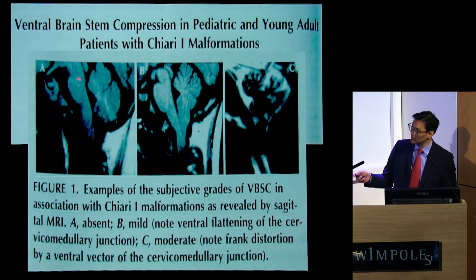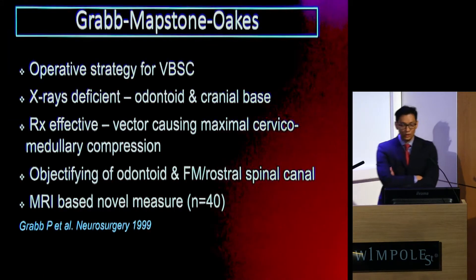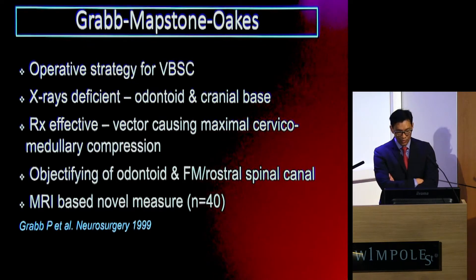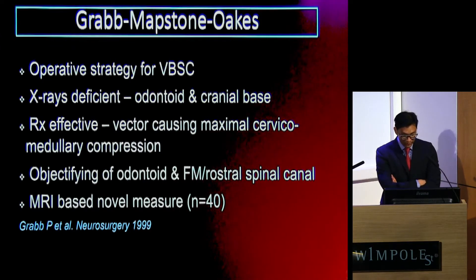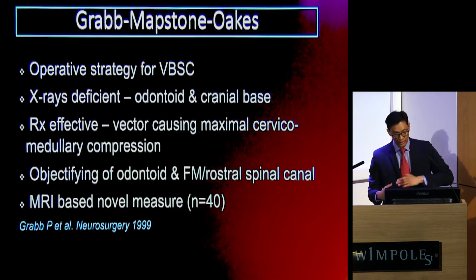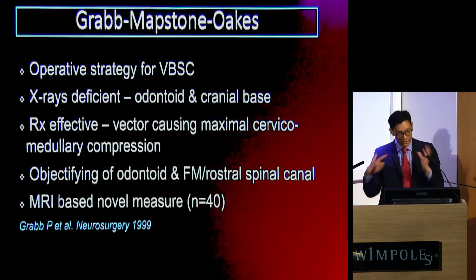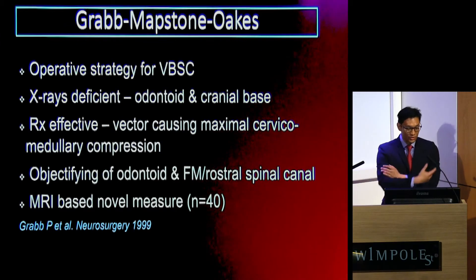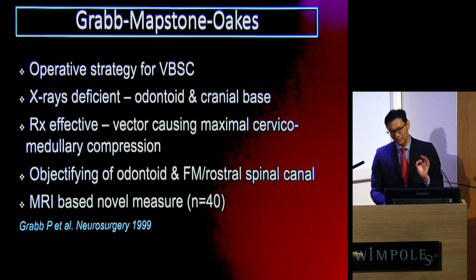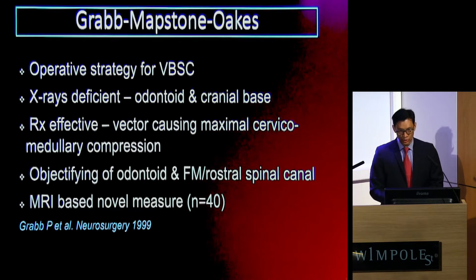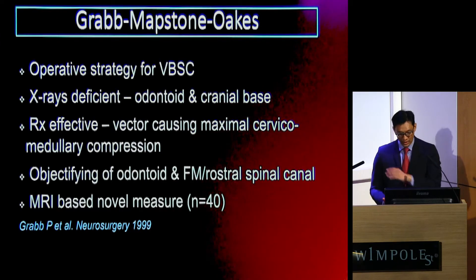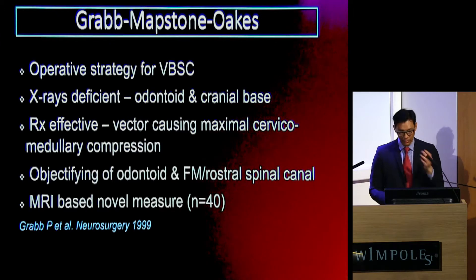What they labelled here is absent, mild, and a more severe compression. What they set out to do was to look at an operative strategy in terms of stratifying risk. They recognised that X-rays were deficient because you were only looking at the odontoid and skull base osseous structures. They also recognised that treatment could only be effective if you addressed the vector causing the maximal cervical medullary compression. So they attempted to use MRI and a novel-based measure to objectify the degree of odontoid impression on the ventral aspect of the foramen magnum and rostral spinal canal.